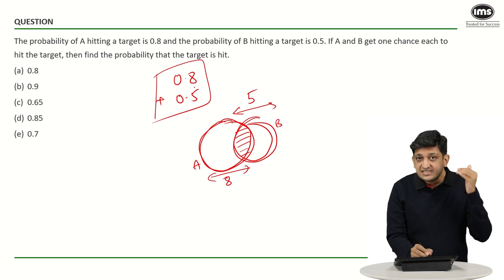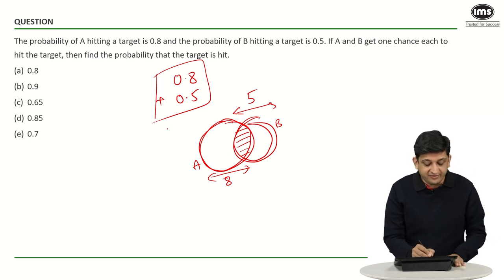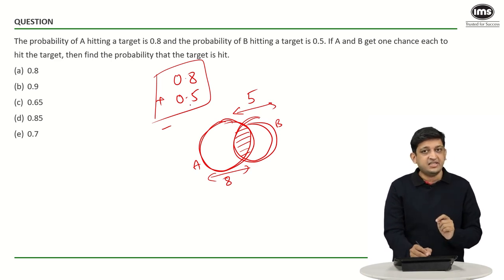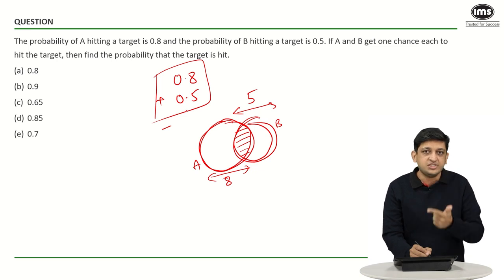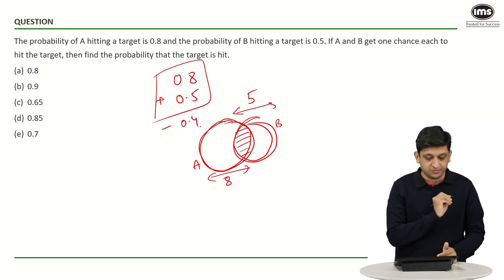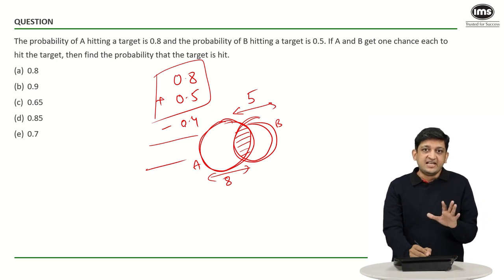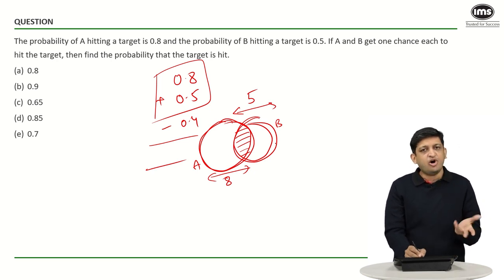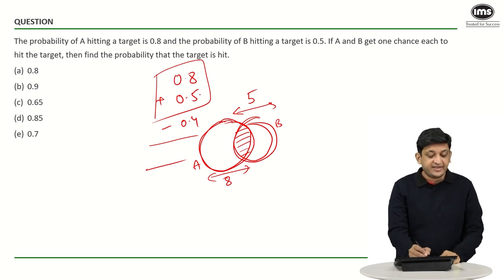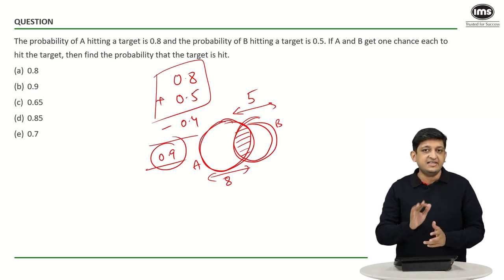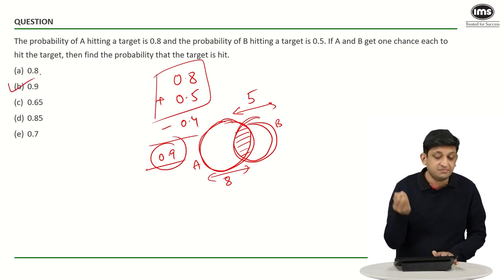So: 0.8 plus 0.5 minus the intersection. Because these two are independent events, the intersection is 0.8 × 0.5 = 0.4. The effective probability of the target being hit — whether A hits, B hits, or both — is 8 + 5 − 4 = 9, giving us 0.9. So our answer is option B.